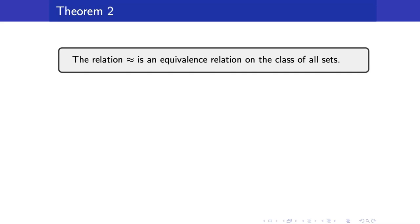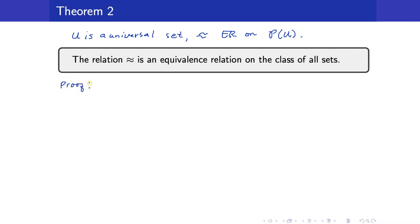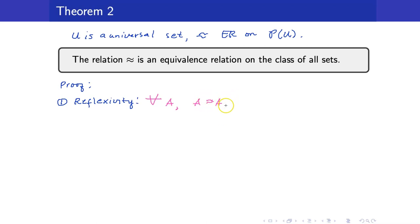What does that mean? If U is a universal set, the equivalence relation acts on the power set of U. Let us prove this. First, for reflexivity: we need to show that for any set A, A is equivalent to itself. The bijective function from A to itself is simply the identity function on A, and this is bijective.